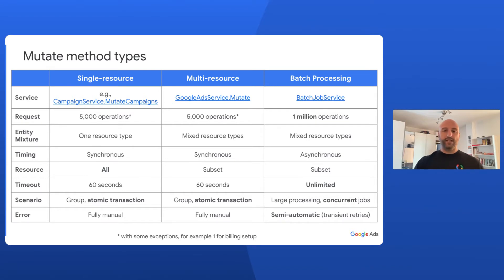The next question would be: is there a limit to the number of operations that you can put in a single API request? And if there is, is there a way to overcome this limit? The answer is yes to both questions. Both single resource services like CampaignService and GoogleAds.Mutate have a limit of 5000 operations per request, so they may not be suitable if you have a very large number of operations to perform at once. For this use case, the Google Ads API provides batch jobs that allow up to a million operations per job and are designed to be executed asynchronously.